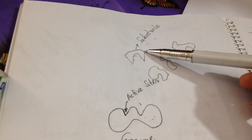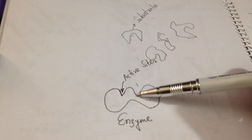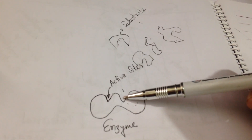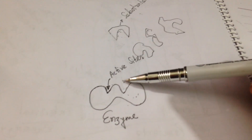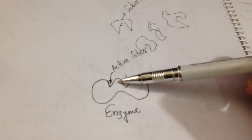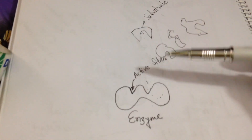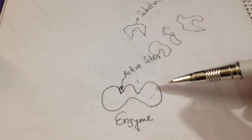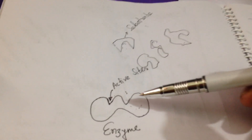The substrate is the substance which binds onto the enzyme at its active site. The active site is a site which works as a mediator — the place where the enzyme catalysis reaction is carried on. This is the relationship between substrate and the active site of the enzyme.